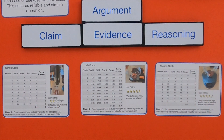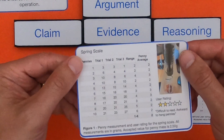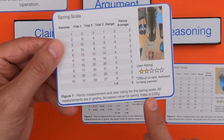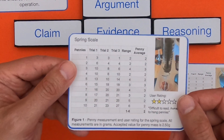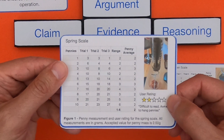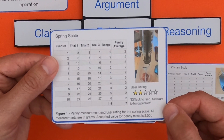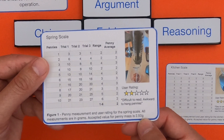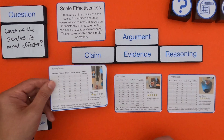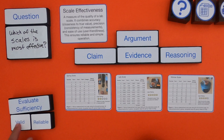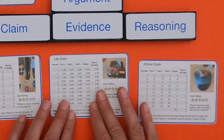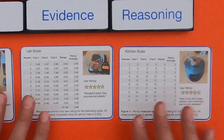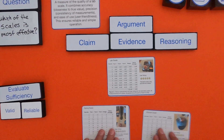As I scan the evidence, one thing you always want to do is look at the figures at the bottom — there's always a figure that tells you more about the evidence. For example, the spring scale figure tells us it has penny measurement data, a user rating, measurements in grams, and that the accepted value for a penny is 2.50 grams. This seems like valid evidence. The same kinds of figures are included on the lab scale and the kitchen scale.